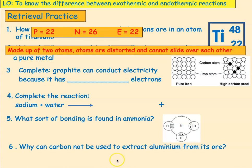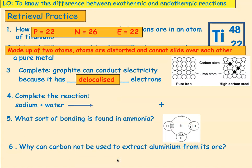Complete this sentence: graphite can conduct electricity because it has what electrons? The answer is delocalised electrons.